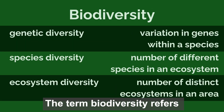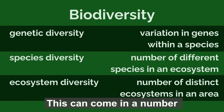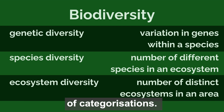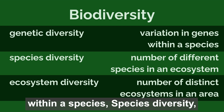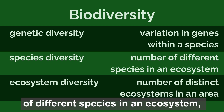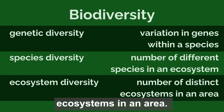The term biodiversity refers to the variety of life in a given area. This can come in a number of categorizations: genetic diversity, which means the variation in genes within a species; species diversity, which means the number of different species in an ecosystem; and ecosystem diversity, the number of distinct ecosystems in an area.